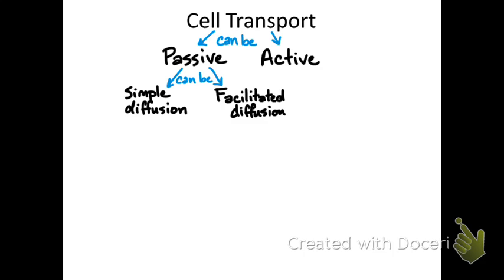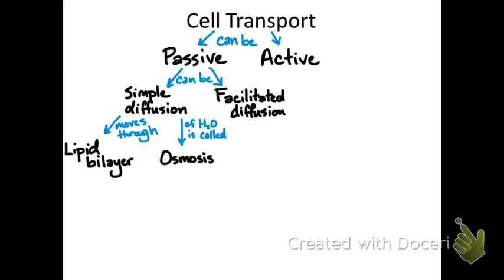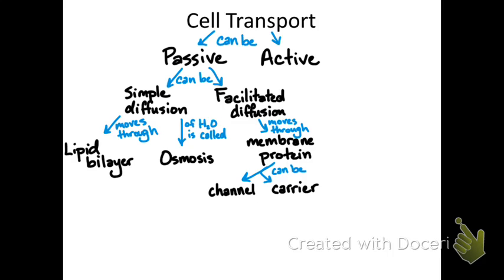Passive transport has two subtypes: simple diffusion and facilitated diffusion, which is an assisted form of diffusion. Simple diffusion moves straight through the phospholipid bilayer. Simple diffusion of water through a channel protein called an aquaporin has a special name — osmosis — and it's just another type of passive transport. Facilitated diffusion means substances must go through a membrane protein, and those proteins in passive transport can be channels or carriers.